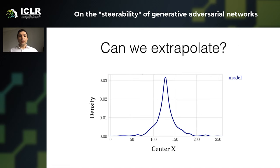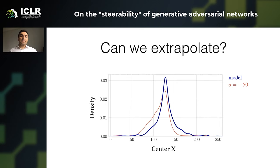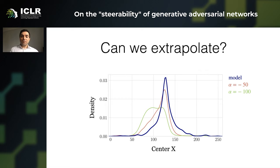We performed experiments to test these hypotheses. First, we want to see if these transformations can extrapolate. We compute the center of objects generated by the GAN and plot the density. Then we take steps in the transformations and see that they can shift the distribution of images. The more steps we take, the further we can shift the distribution until we hit the plateau, after which we fall off the manifold of natural images.